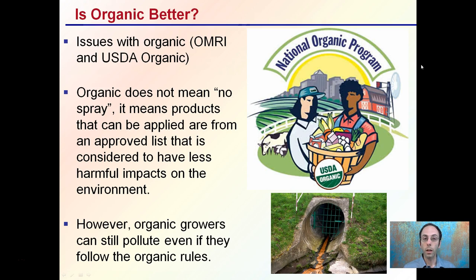Now, is organic better when looking at plant pests? Organic standards are typically represented by OMRI or USDA Organic. Organic does not mean no spray — just because something is organic doesn't mean it wasn't sprayed with anything. It simply means that products applied come from an approved list considered to have less harmful impacts on the environment. However, organic growers can still pollute even if they follow organic rules.